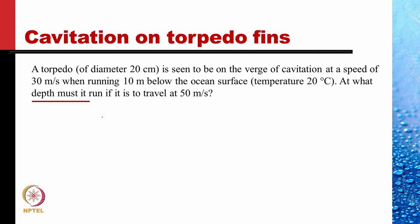The problem is that a torpedo of diameter 20 centimeters is seen to be on the verge of cavitation at a speed of 30 meters per second when running 10 meters below the ocean surface at a temperature of 20 degrees Celsius. We need to specify the temperature because cavitation is occurring, and the vapour pressure depends very strongly on temperature. So we need the vapour pressure of water at 20 degrees Celsius.